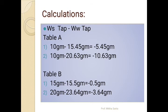Calculation part A: Ws tap minus Ww tap. From table A, 2 readings we have taken. And from table B, 2 readings we have taken.